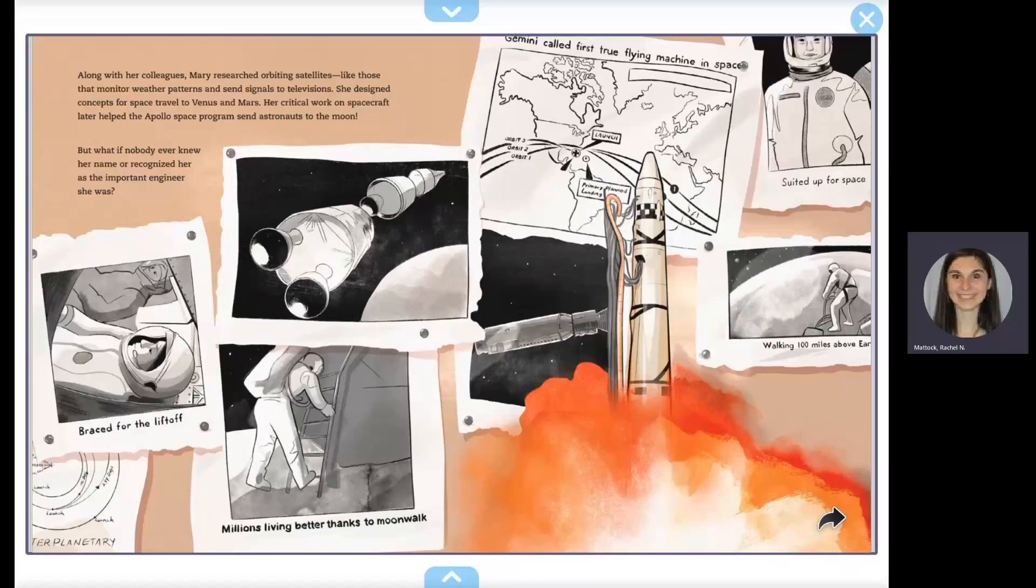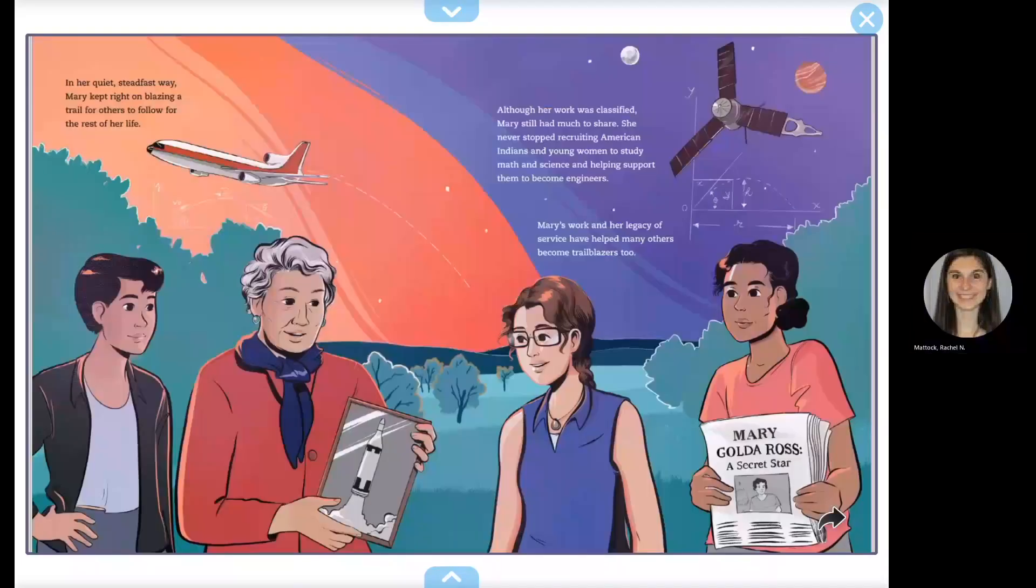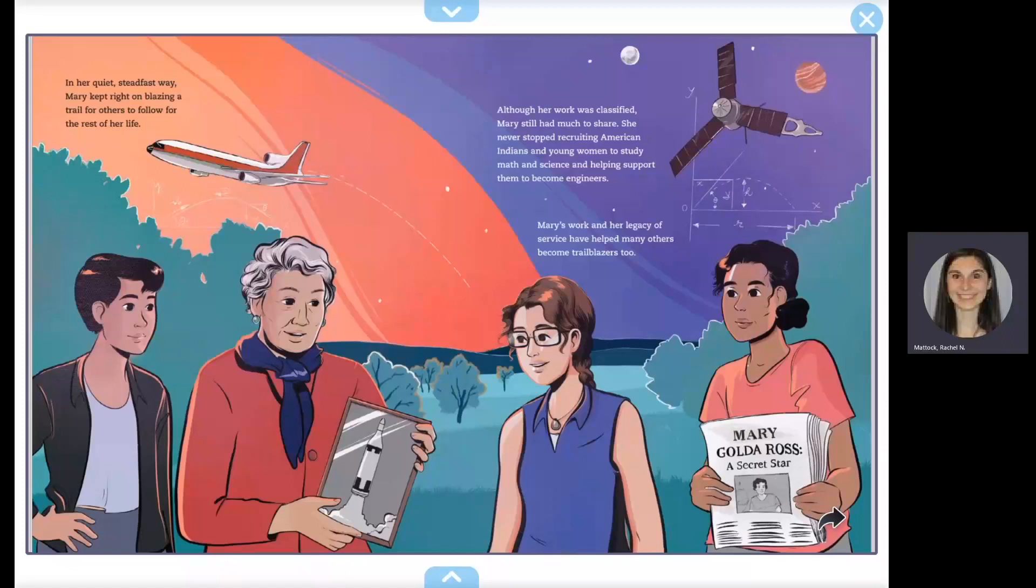But what if nobody ever knew her name or recognized her as the important engineer she was? That didn't matter to Mary. Her life reflected another Cherokee value: humility. Mary never bragged or drew attention to her skills. Her work, including helping to put a man on the moon, spoke for itself. Whenever Mary received awards, she always thanked her colleagues because she knew no one person deserved credit for what everyone had done together. In her quiet, steadfast way, Mary kept right on blazing a trail for others to follow.